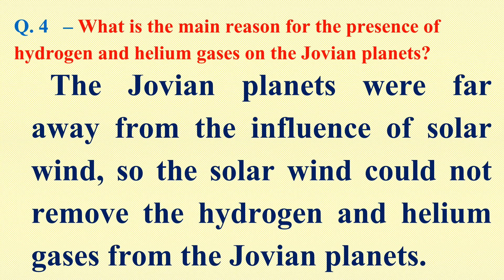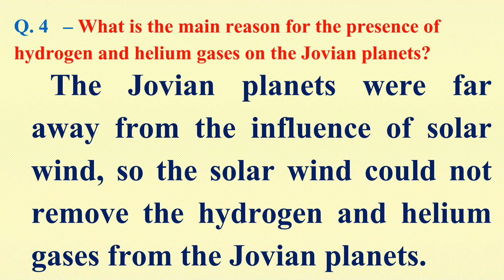Question number 4: What is the main reason for the presence of hydrogen and helium gases on the Jovian planets? Jovian planets are the outer planets which are still in gaseous form. These are Jupiter, Saturn, Neptune and Uranus. The answer is that the Jovian planets were far away from the influence of the solar winds, so the solar winds could not remove the hydrogen and helium gases from them. This is why hydrogen and helium gases are still present on these planets.